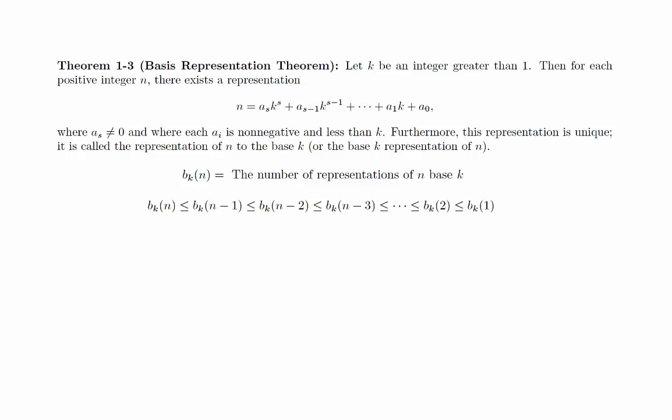Also, b_k(1) equals 1, since any other representation will be greater than 1. We can use this to show that there is at most one representation of n for any n.